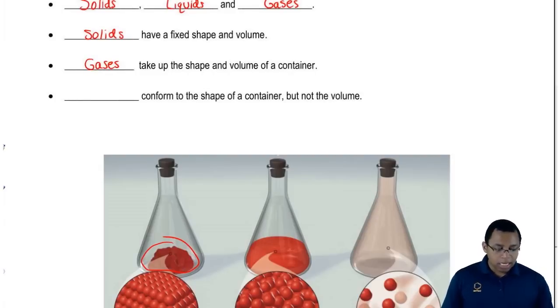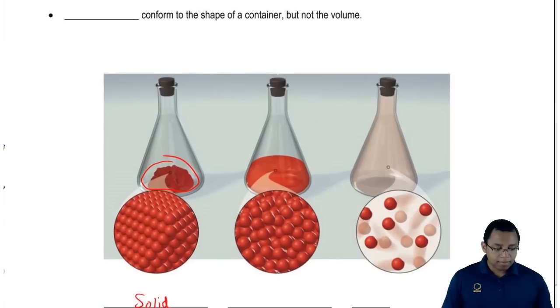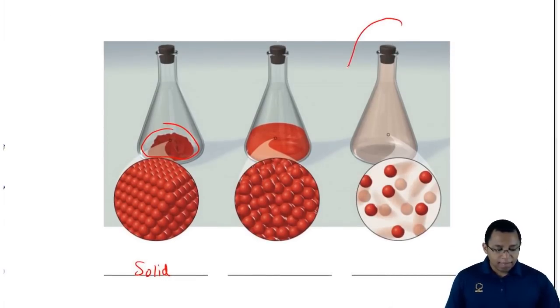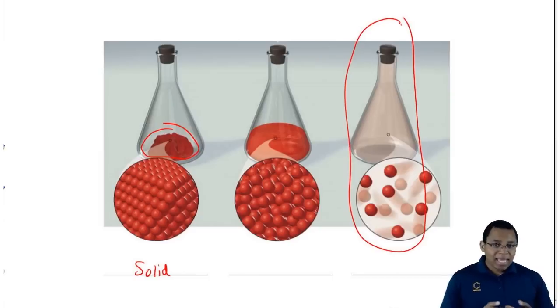Gases will take up the shape and volume of the container. If we take a look at this third image right here, you can see that inside the container looks a little bit pink. That pink color is basically gas molecules spreading themselves out as far as possible to take up every single inch inside of that container.